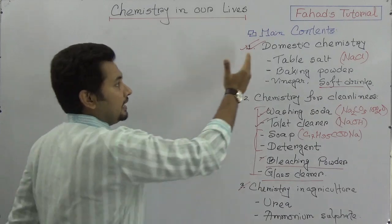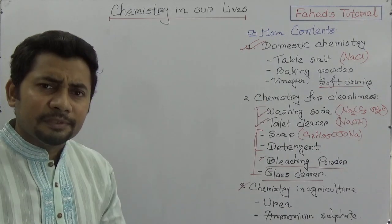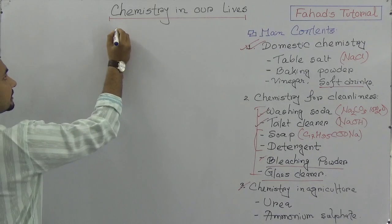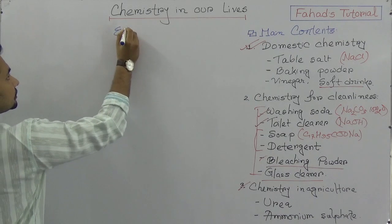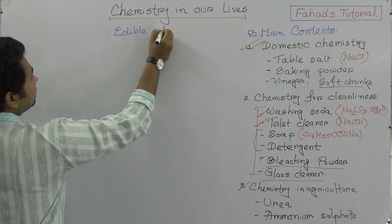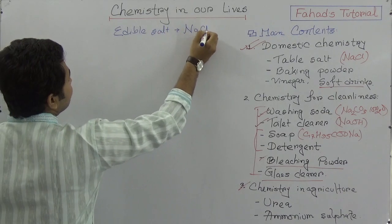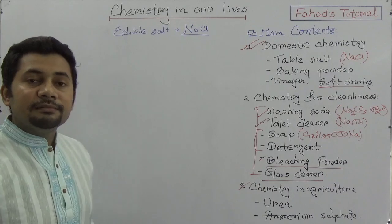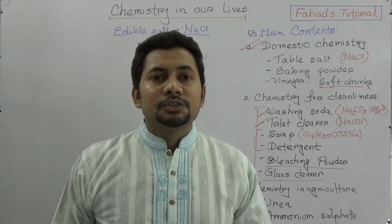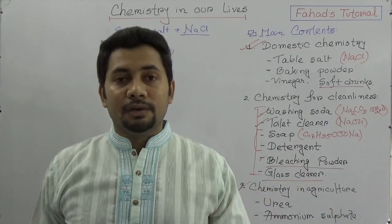In this first lecture I will focus only on the domestic chemistry part. Now think about table salt, which is the edible salt. The formula of edible salt is sodium chloride (NaCl). Sodium chloride is extracted mainly from seawater.